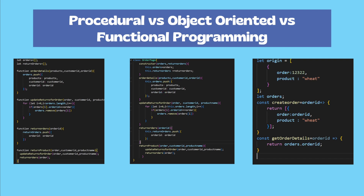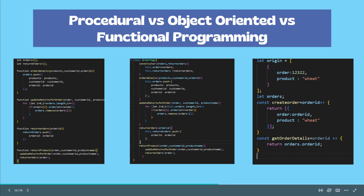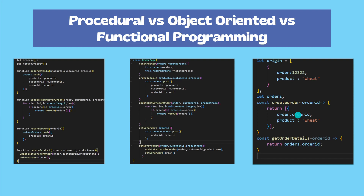Next, in the object-oriented programming language example, we have the class and object concepts used. For any implementation, we first create a class, and in that class we have a constructor and methods or functions defined. In those methods, we add the code logic to complete the task. In the functional programming language example, it is mainly used for performing mathematical operations. It doesn't have the concept of classes, functions, or procedures. It is very simple to implement, but doesn't support as many features compared to the other two programming languages.